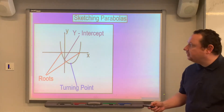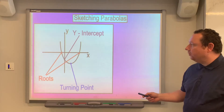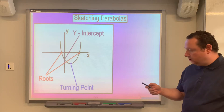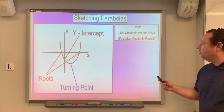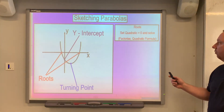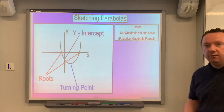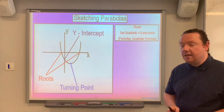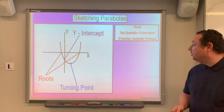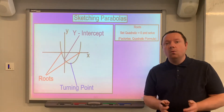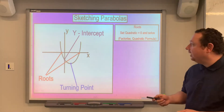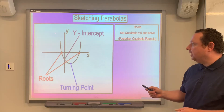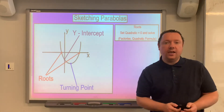Looking at a graph of a parabola — the graph of a quadratic — where it cuts the x-axis is called the roots. We need to show the roots if we draw a sketch of a parabola. To find the roots we can set the quadratic equal to zero and solve, either by factorising or using the quadratic formula. Not all quadratics have real roots. We can find the discriminant — watch my previous video on the nature of the roots — and if that's less than zero it means it doesn't cross the x-axis.